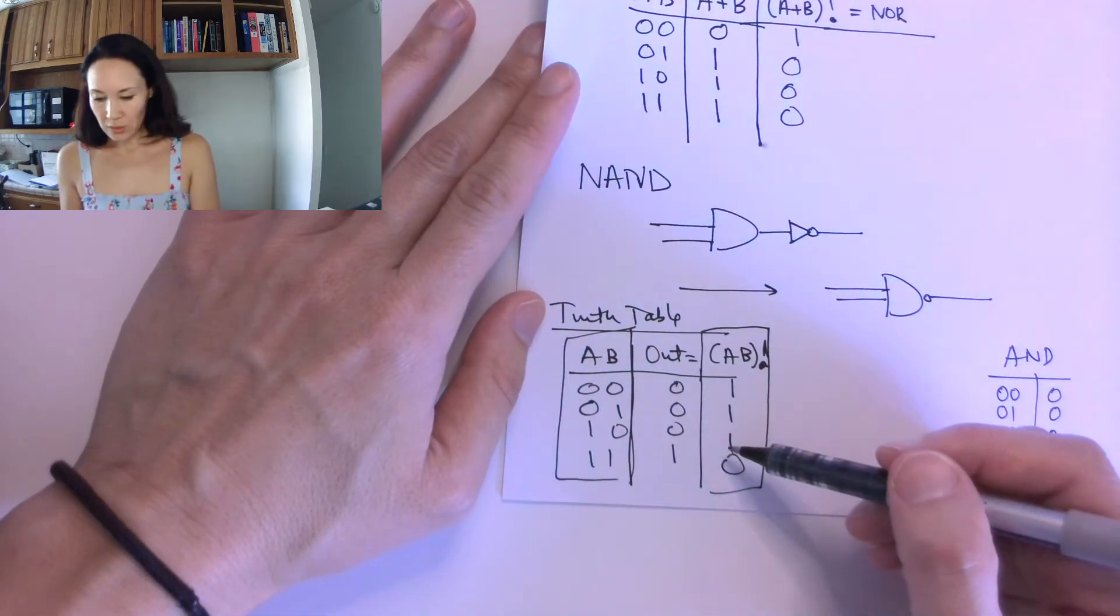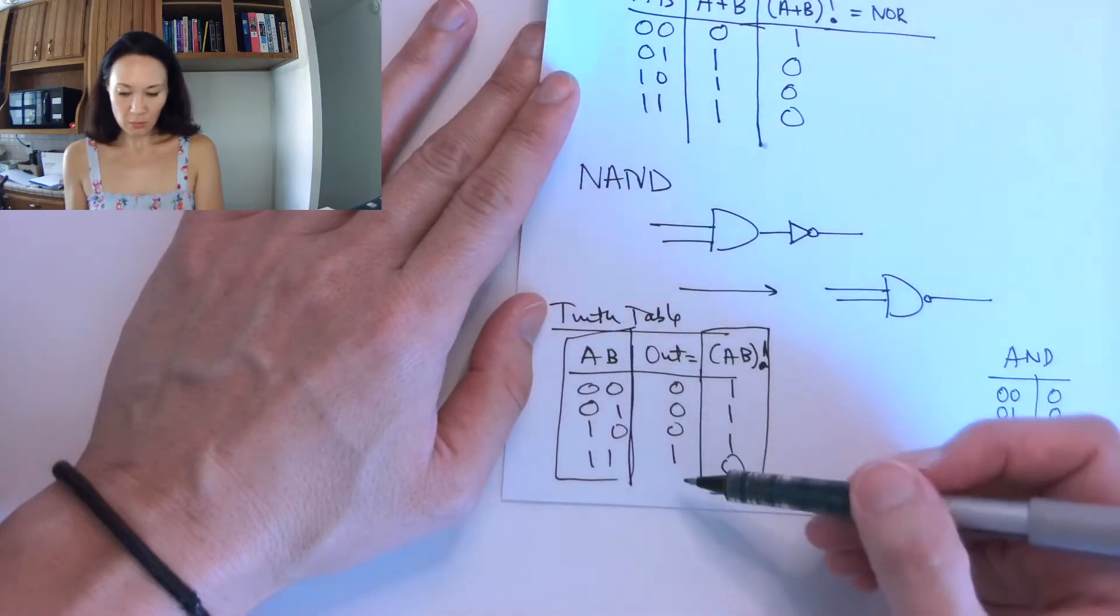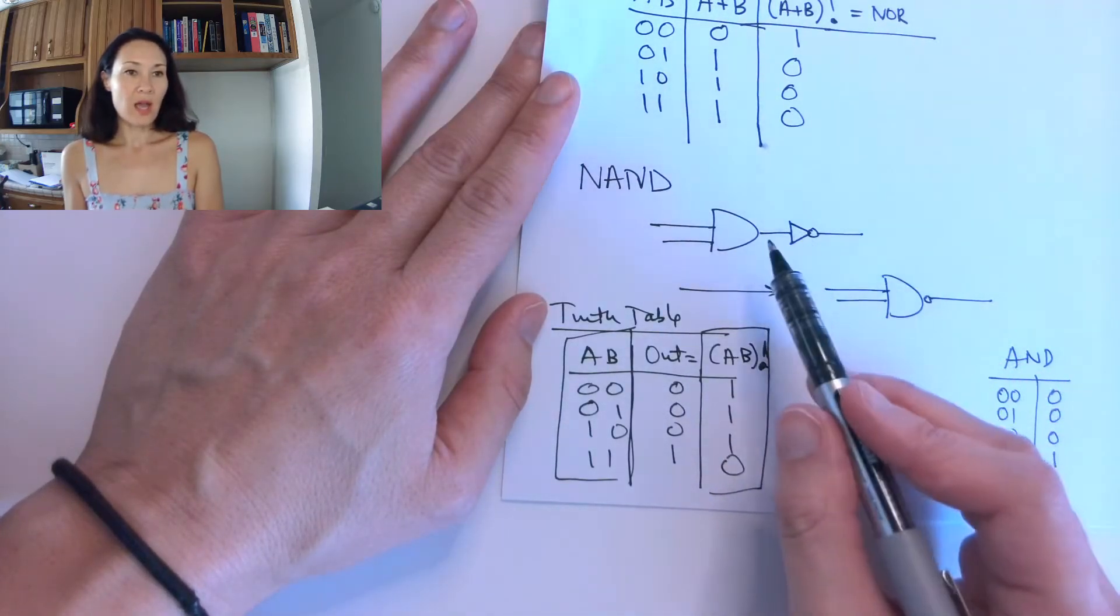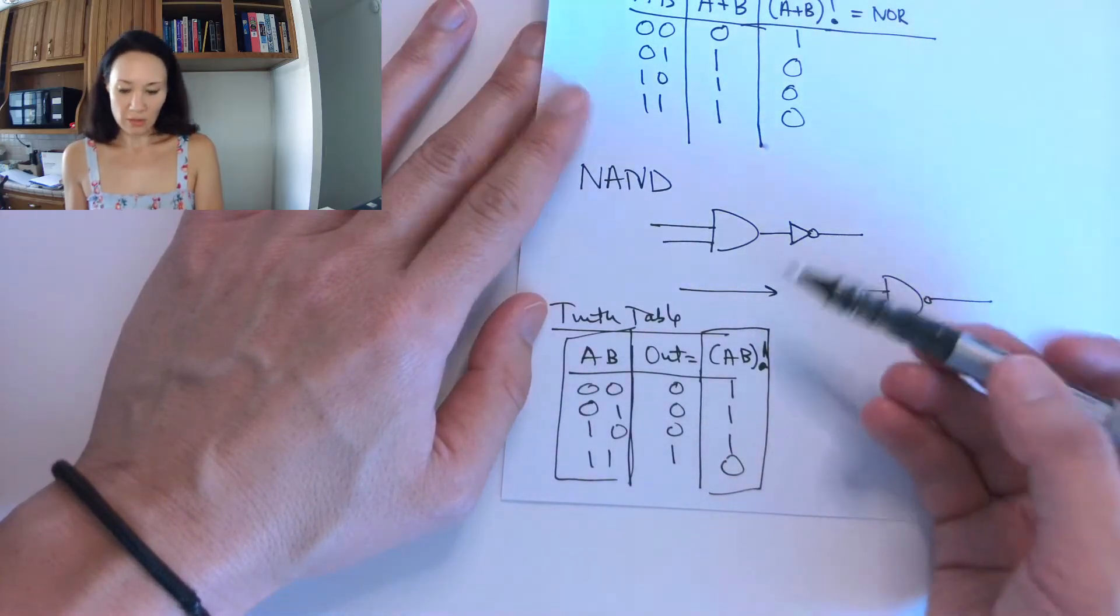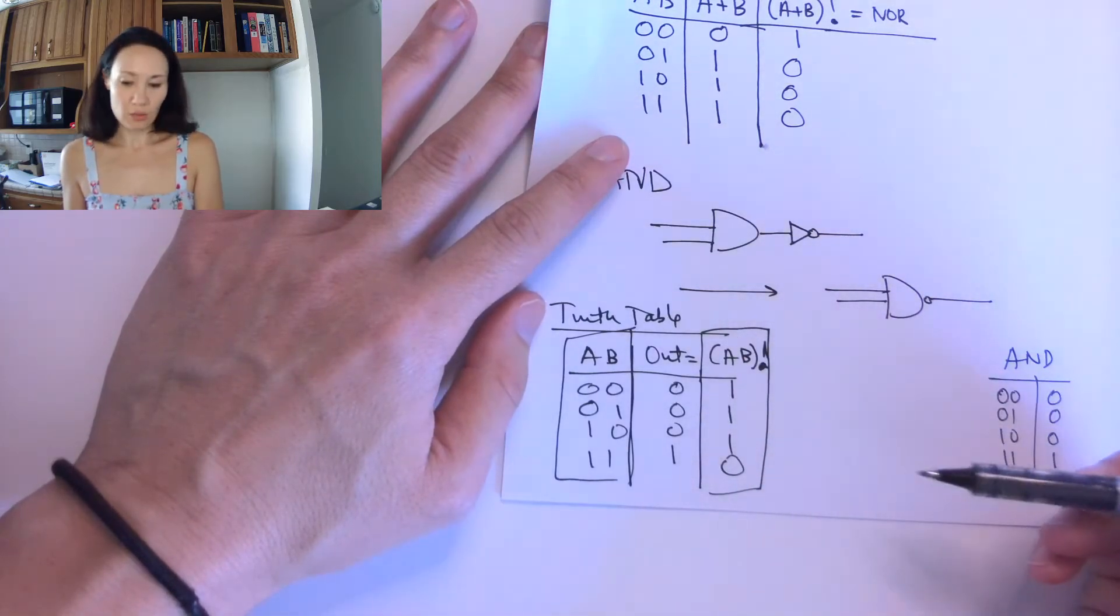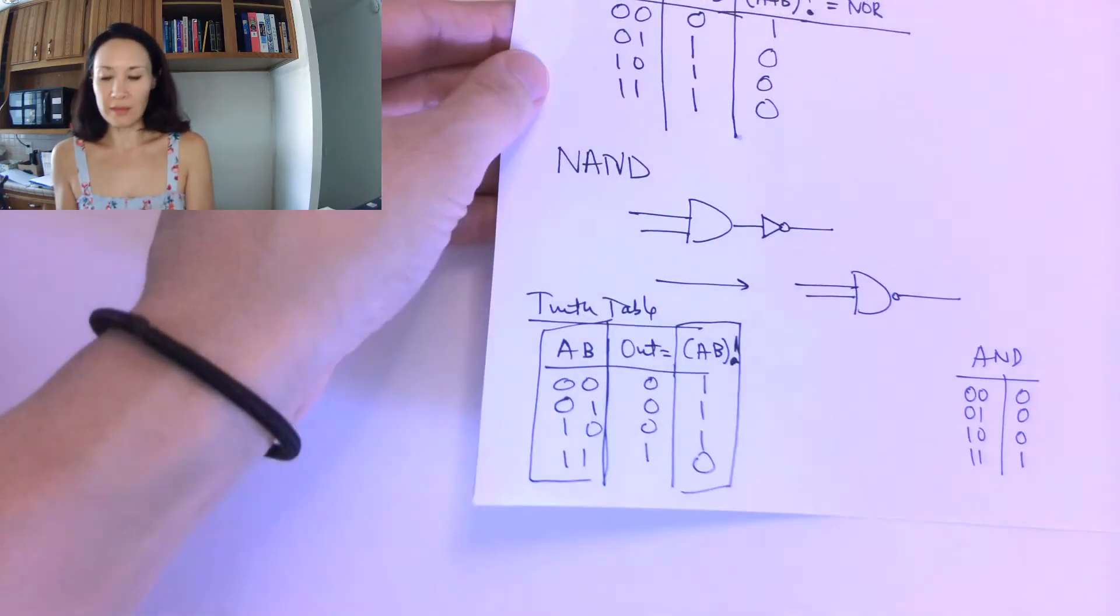In fact, when we go to do more complicated circuits in the next video, it's going to be really handy to break each stage into intermediary steps as columns on your truth table. We'll talk more about that later.